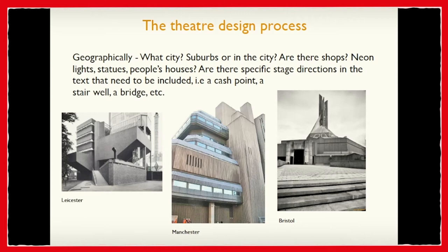Geographically, does the city the play is set in make a difference? I've included examples of brutalist architecture in Leicester, Manchester, and Bristol — if I'm using that as a reference and setting the show in Leicester, would it be relevant, would it strike a chord with the audience if I'm referring to brutalist architecture they might recognize? Are we in the suburbs or right in the city centre? Are there any shops mentioned in the script, neon lights, statues, people's houses? And are there any specific stage directions in the text that need to be included, like a cash point or a stairwell?